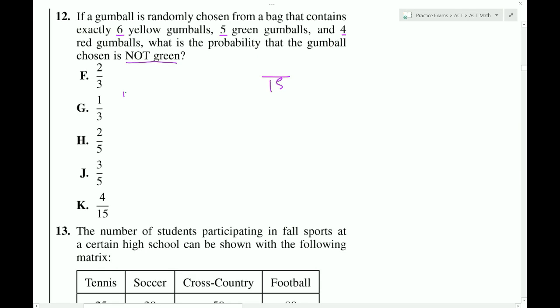Whenever we're doing probability, we always do success over total. Our total is 15, and in this case, success means not green. So yellow's not green, and also red is not green. So that's 10 out of 15, which is not a choice. But we can actually reduce this number. So we do 2 times 5, and we do 3 times 5. The 5s cancel out, and that gives us 2 thirds, which is choice F.